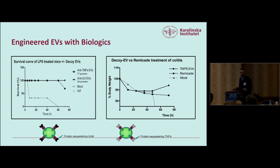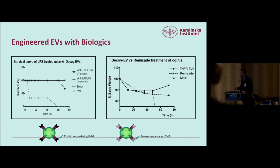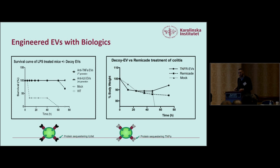In unpublished data, we show we can get therapeutic potency by engineering EVs. Mice treated with an EV displaying a protein that sequesters an IL-6/IL-6 receptor complex all survive in an LPS-induced inflammation model. Similarly, treating with an anti-TNF decoy also shows increased survival over mock-treated mice. In an inflammatory colitis model, mice treated with our anti-TNF decoys recover to a slightly greater extent than Remicade-treated mice. This demonstrates you can engineer the EV surface to further improve therapeutic activity.